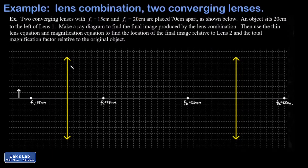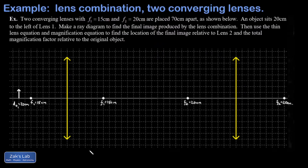In this video we're looking at a lens combination. We have two converging lenses: one with a focal length of 15 centimeters on the left, one with a focal length of 20 centimeters on the right, and these lenses are separated by 70 centimeters. We've placed an object 20 centimeters from the first lens, labeled do1, because the image produced by the first lens will be used as the object for the second lens (do2). We're trying to make as accurate a ray diagram as possible to approximate the final image location and final magnification relative to the original object.